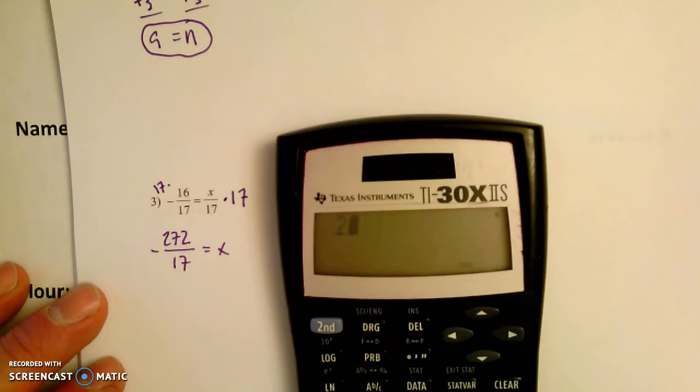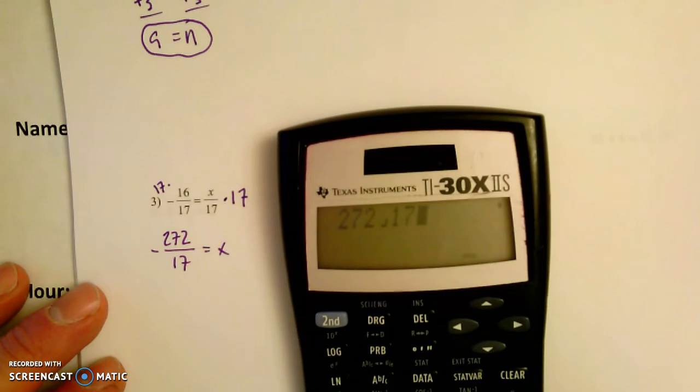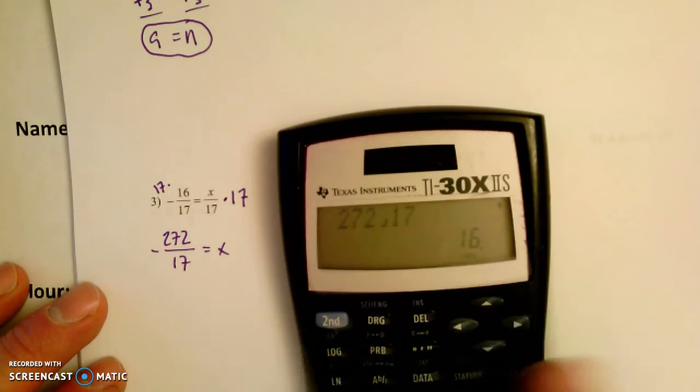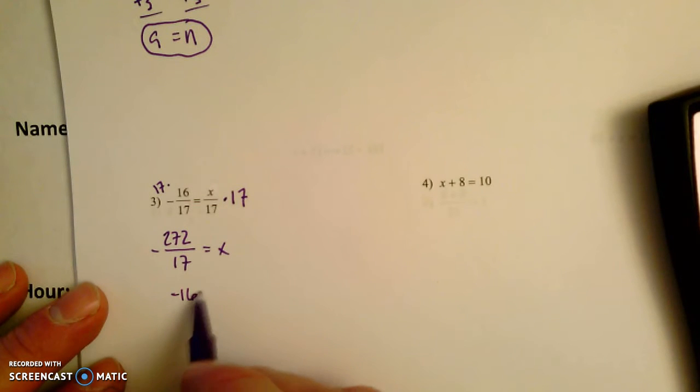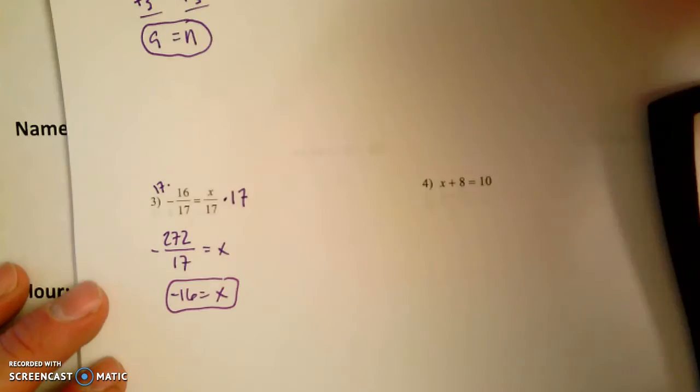Let's go 272, A, B, C, 17. And the calculator will do the reduction for us. 16. So negative 16 equals x. Let's do another example.